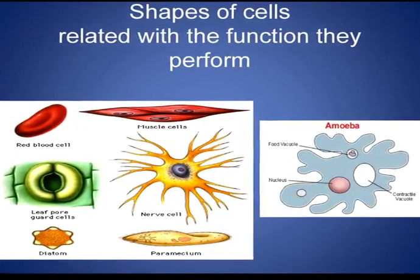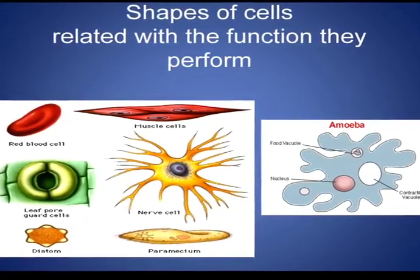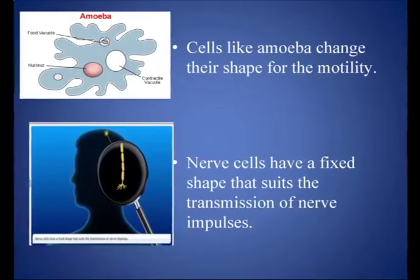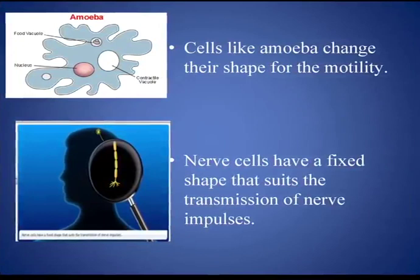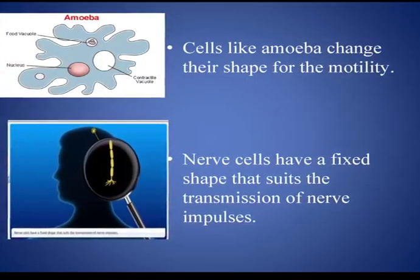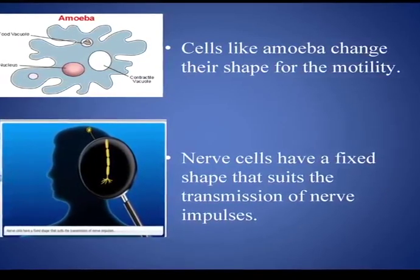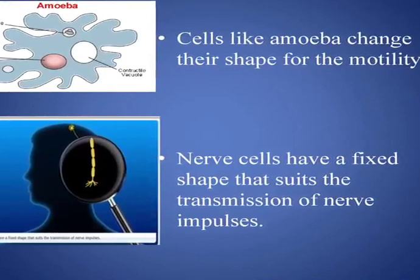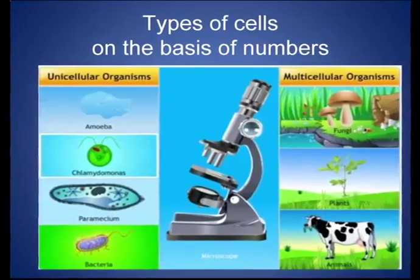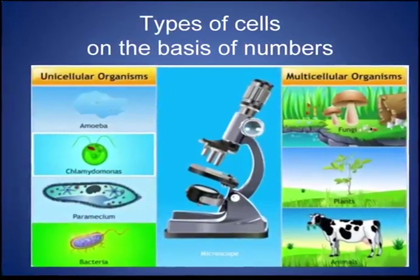Different cells have different shapes. The shape of a cell is related to the specific function it performs. For example, cells like amoeba change their shape for motility, whereas cells like nerve cells have a fixed shape that suits their function of transmitting nerve impulses. The nerve cell has a fixed shape, whereas amoeba can change its shape to perform different functions.